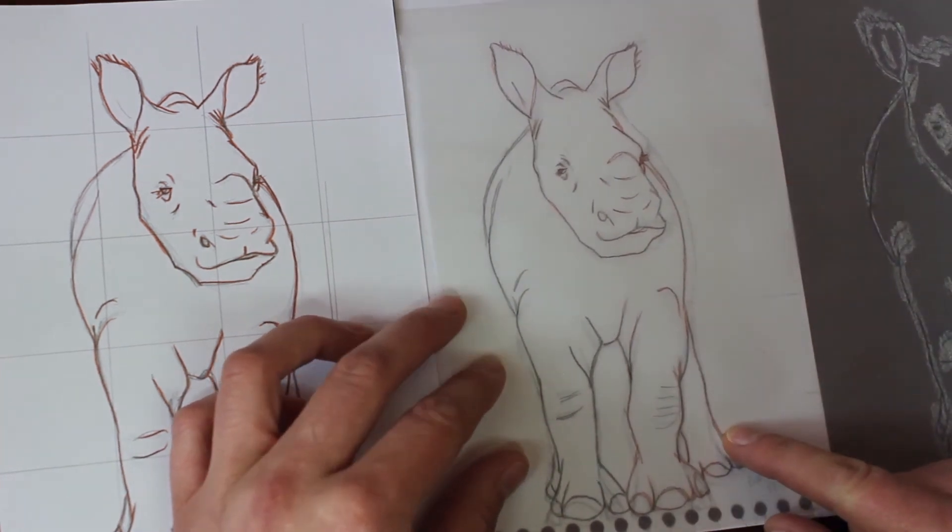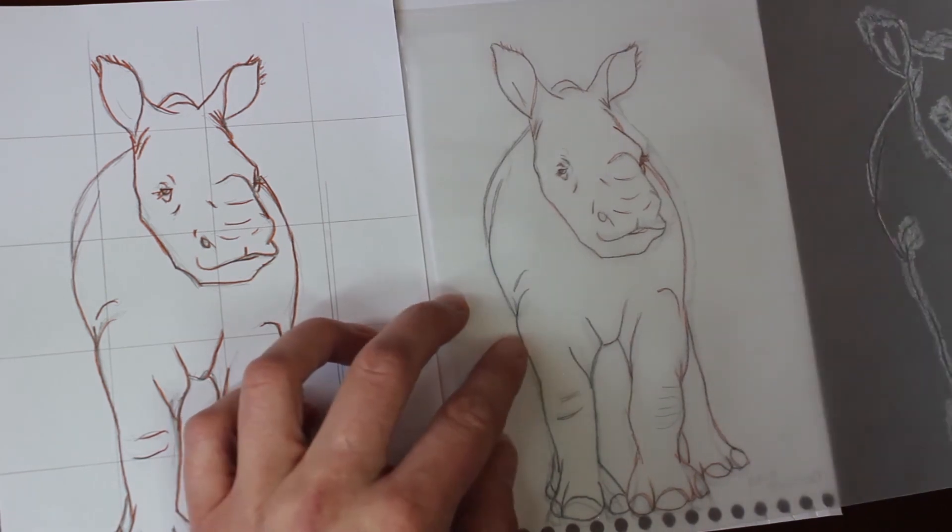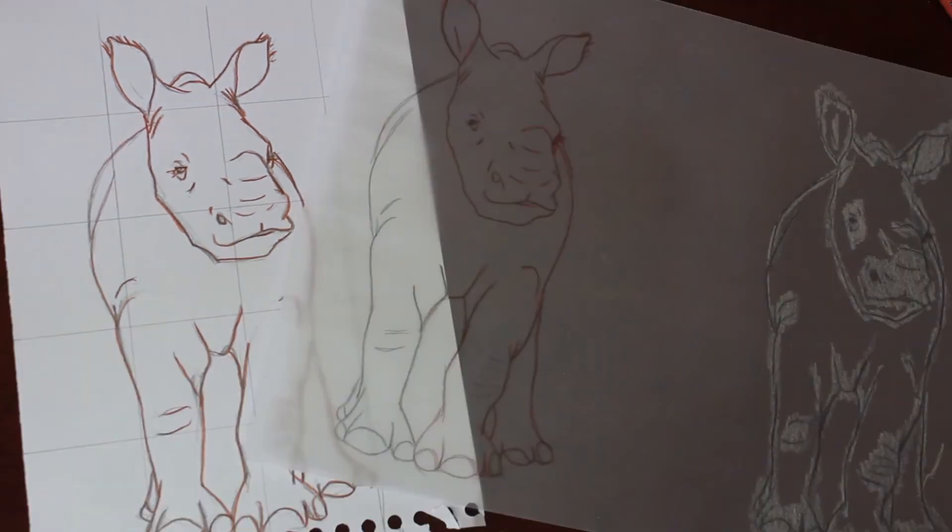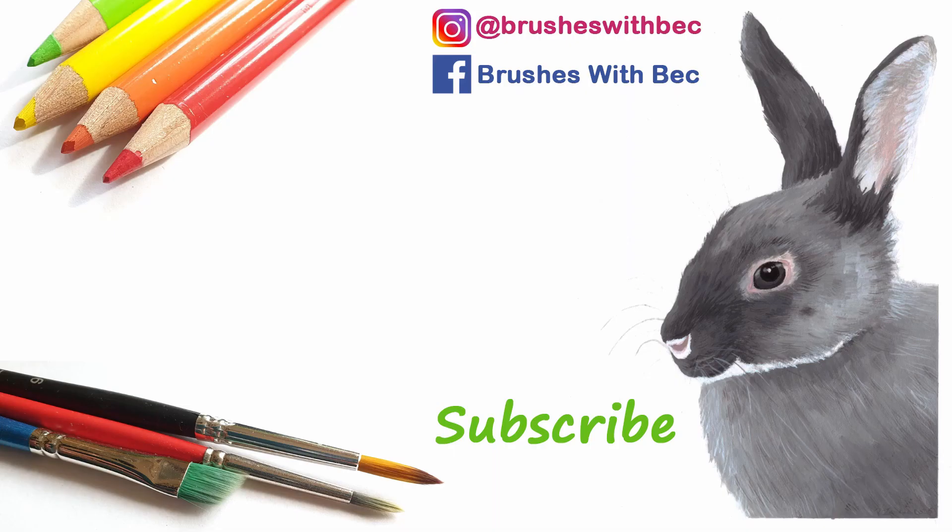So those are five very easy methods for transferring a sketch onto a final piece of paper. This is really beneficial if you are a messy sketcher or tend to erase a lot or press a bit too hard with your pencil because doing any of those things can damage your paper. So I do hope you've enjoyed this video. Give it a thumbs up if you did and comment down below. Please subscribe to my channel and thanks for watching. Stay creative!